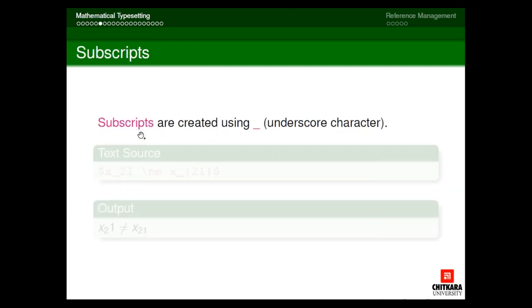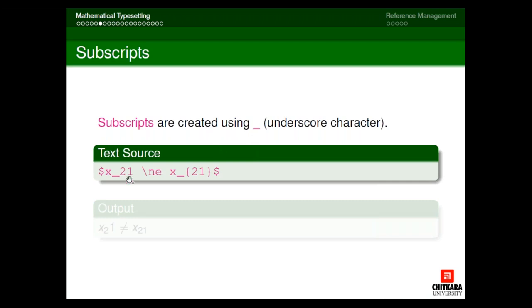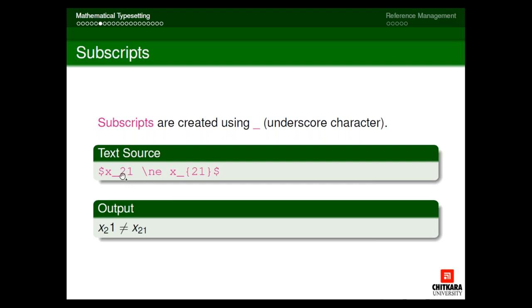Next is subscripts. For superscripts we use the caret symbol; for subscripts we use the underscore symbol. So x underscore 21 without braces only puts 2 in subscript and 1 is written as-is, but x underscore curly braces 21 puts the entire 21 in the subscript. Any group of characters to be written in subscript must be enclosed in curly braces. If only one character is to be written in subscript, you can avoid the curly braces — though using braces still gives the same output.